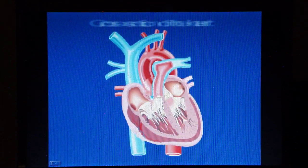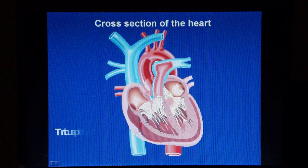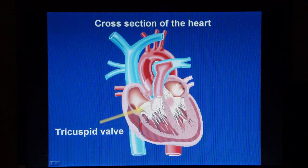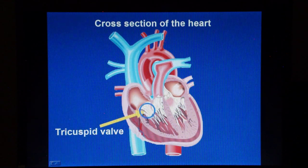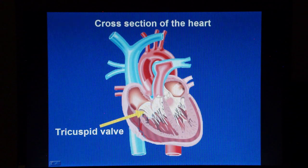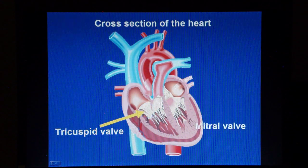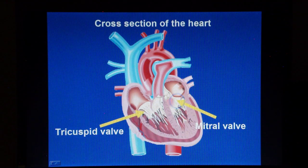The heart has four unidirectional valves, meaning one-way valves. Two are located between the atria and the ventricles. The tricuspid valve on the right side of the heart and the mitral valve on the left side, respectively.